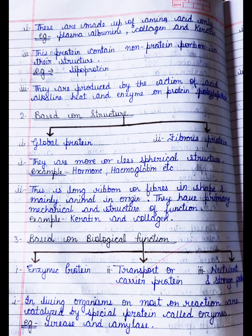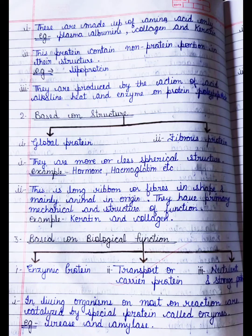Next is classification based on structure. There are two types of protein: globular protein and fibrous protein. Globular proteins have a more or less spherical structure — examples are hormones and hemoglobin. Their shape is not perfectly spherical. Fibrous proteins are long ribbon or fiber shaped and mainly animal in origin. Their main function is mechanical — examples are keratin and collagen, which you know are present in our body.